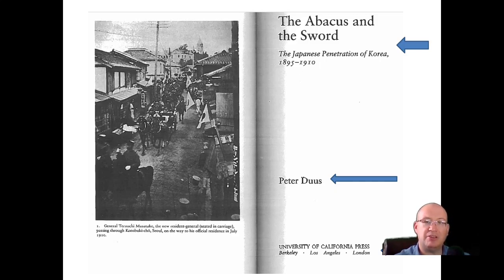You may ask, how do you know what the subtitle is versus the title? Usually they're in different sized fonts. So 'The Abacus and the Sword' is the title, colon, subtitle, comma, years. The publisher is the University of California Press. Notice there are several places of publication listed — the rule is you use the first one, so you would say Berkeley, colon, University of California Press.